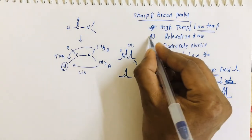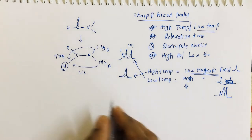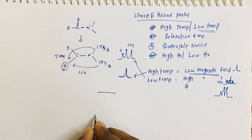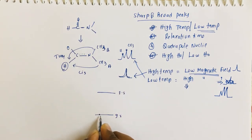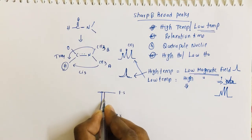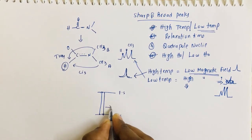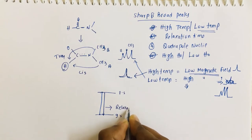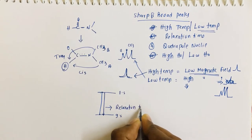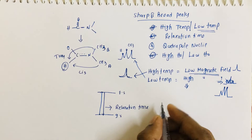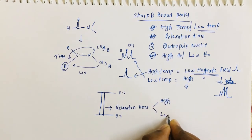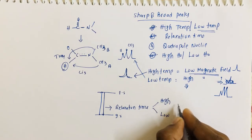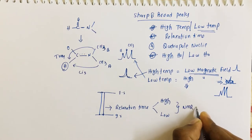Now we go to relaxation time. We have a ground state and an excited state. The proton in the ground state goes to the excited state and comes back to the ground state — this time is called relaxation time. Relaxation time can be high or low, within the NMR time scale, which is on the order of 10⁻⁸.